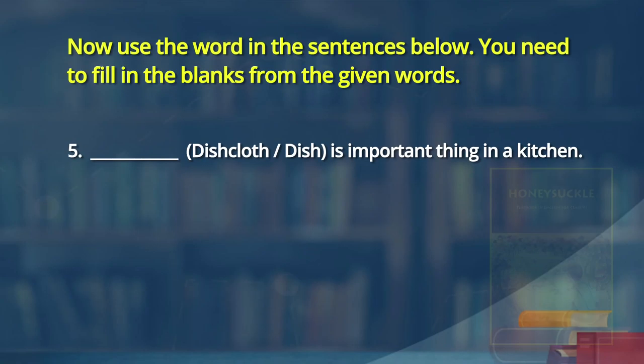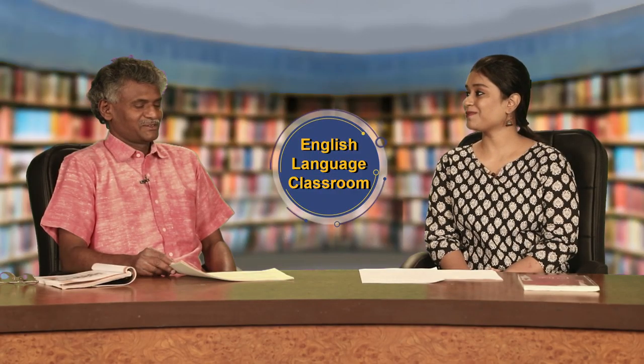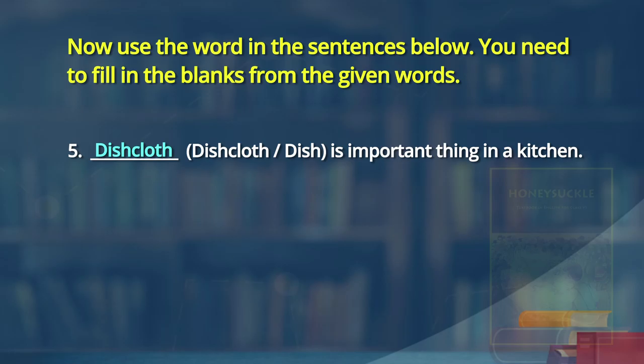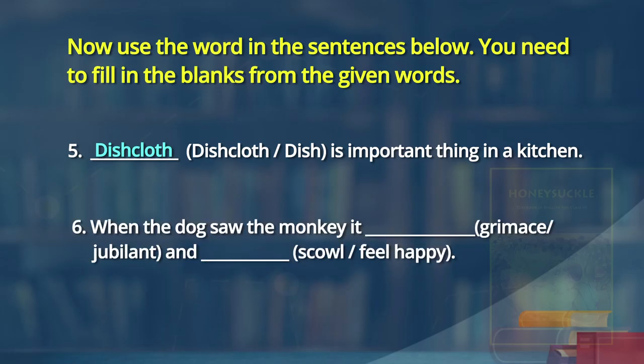Words are not learned by doing them once. More sentences: 'Most of the time we do not know our ignoramus behavior; we realize it later' — sometimes we say things or quarrel without realizing it. 'Dish cloth is an important thing in the kitchen.' And: 'When the dog saw the monkey, it grimaced and scowled.' Generally when dogs see monkeys, or vice versa, they do make those expressions.